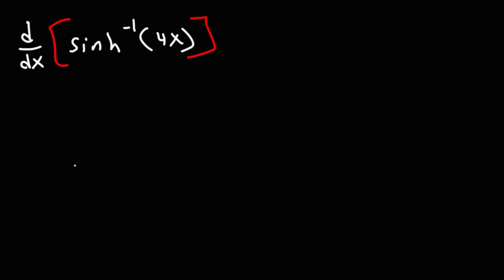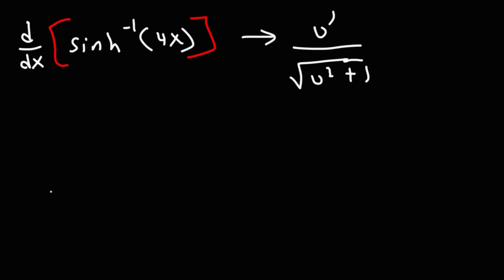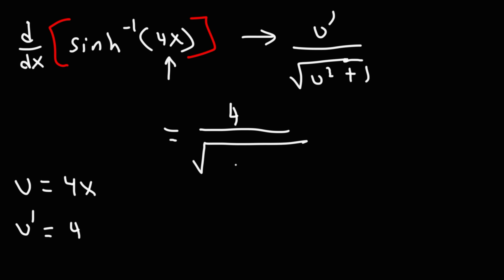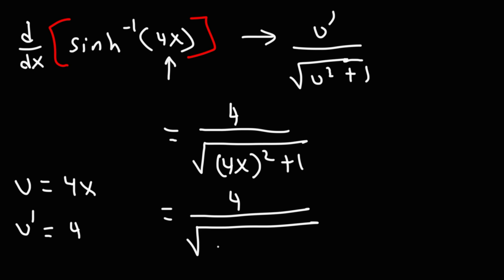What I'm going to do first is write the formula. The answer is going to be u prime over the square root of u squared plus 1. The variable u is whatever we see inside the inverse function, so in this case that's 4x. u prime is the derivative of 4x, which is 4. Plugging that into the formula, it's 4 over the square root of 4x squared plus 1. Since 4x squared is 4x times 4x, which equals 16x squared, the final answer is 4 over the square root of 16x squared plus 1.